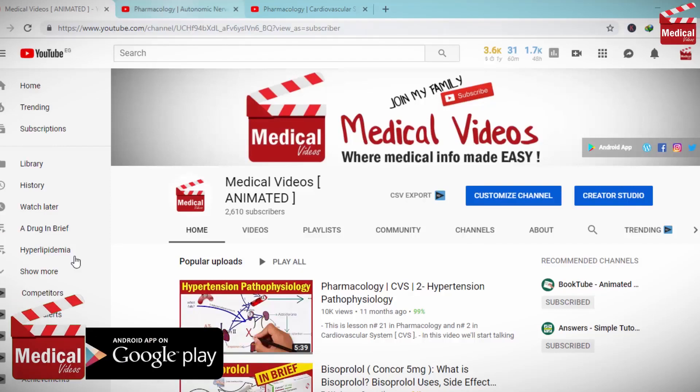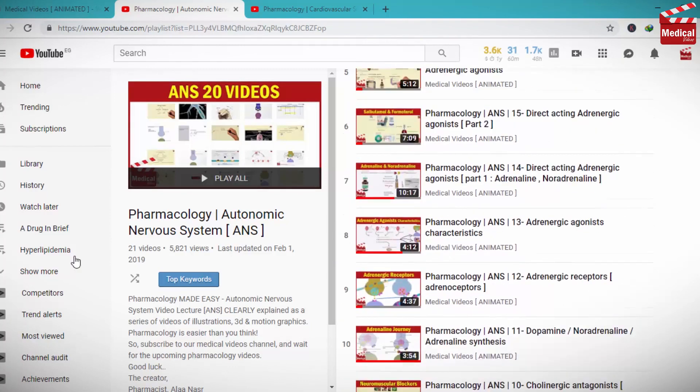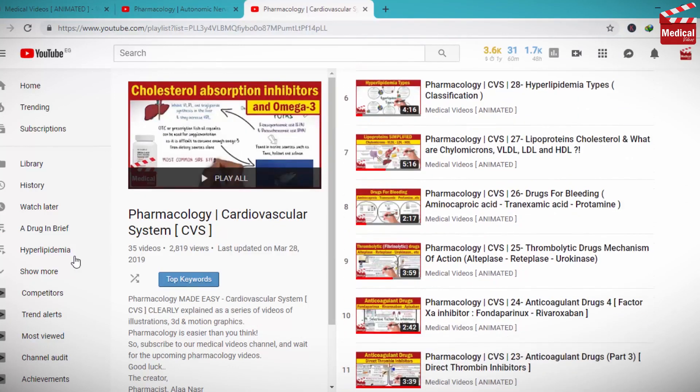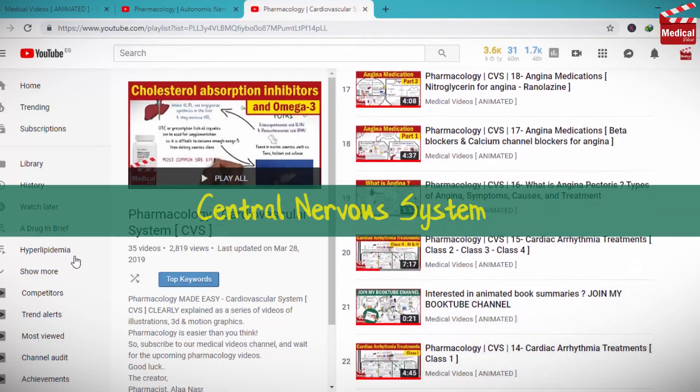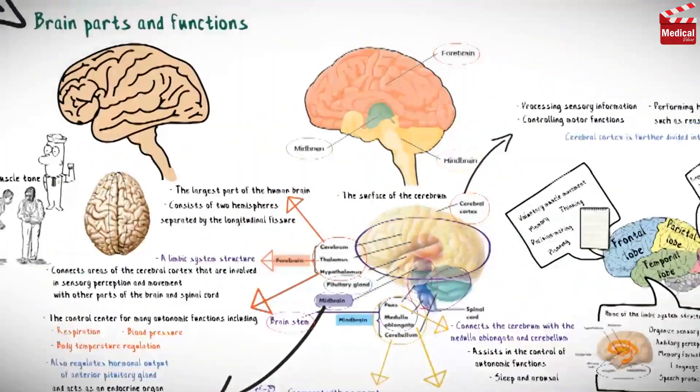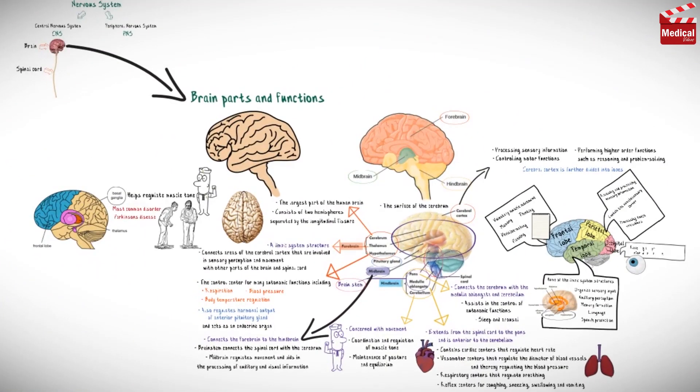In the previous lectures we finished talking about two chapters in pharmacology: the autonomic nervous system and the cardiovascular system. In this lecture we'll start talking about the central nervous system. We're going to talk about an important introduction that will make it easier to understand the upcoming lectures.